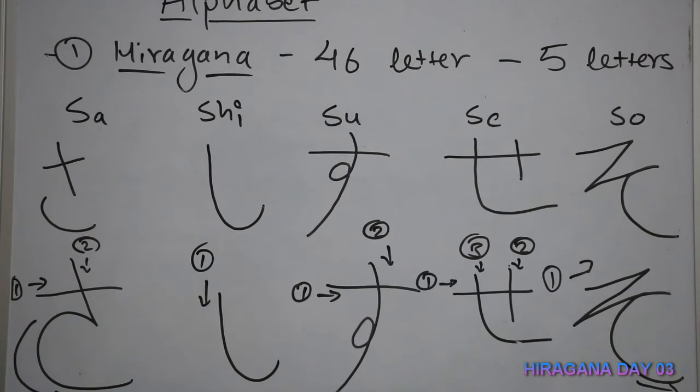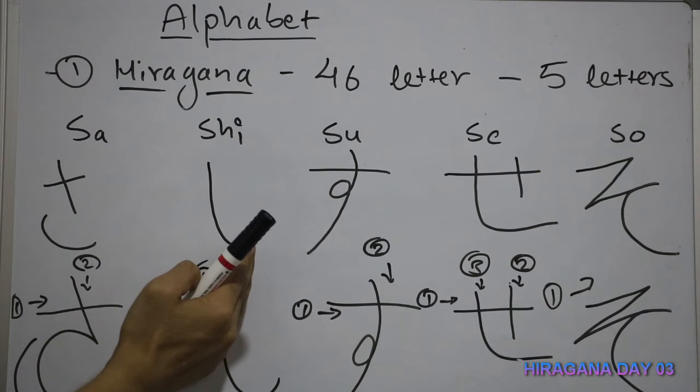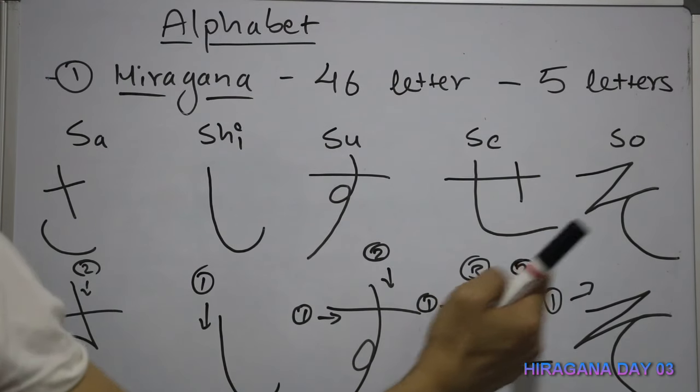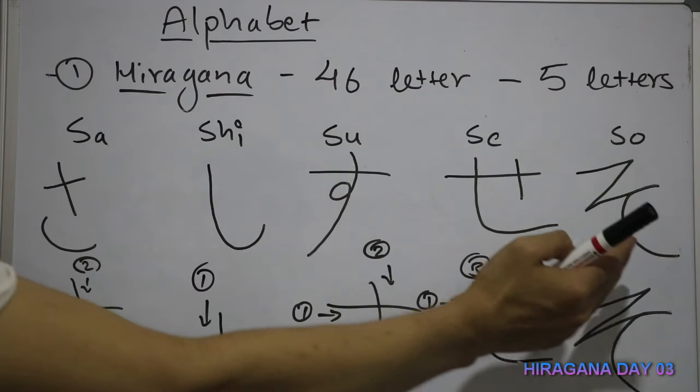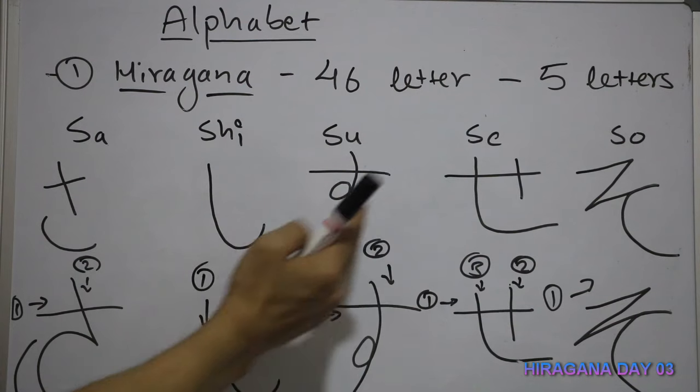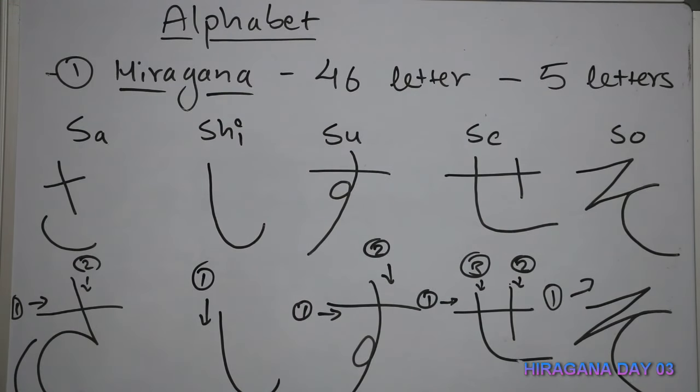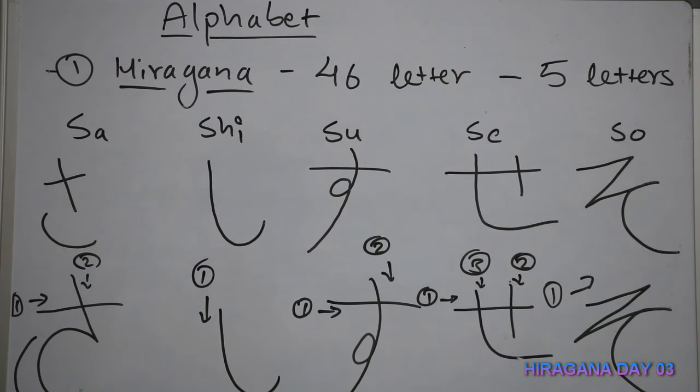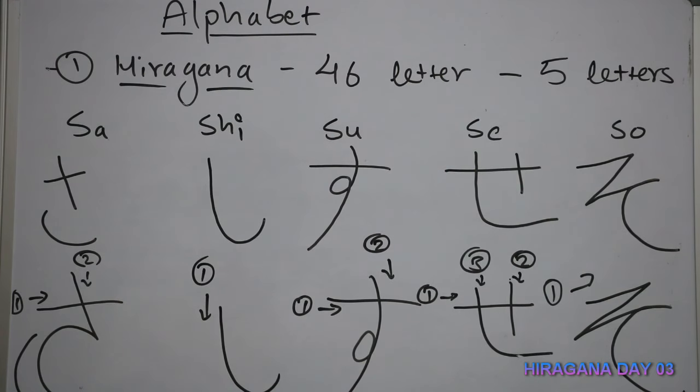We can read this first part. You can read it first. Sa, Shi, Su, Se, So. Back to K: Ka, Ki, Ku, Ke, Ko. Ka, Ki, Ku, Ke, Ko.